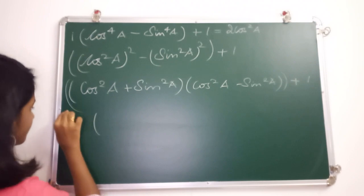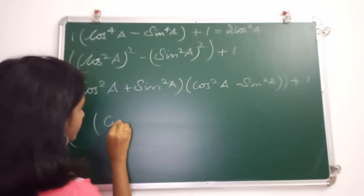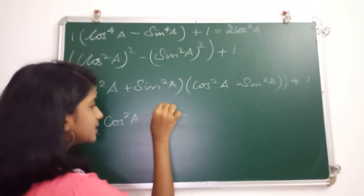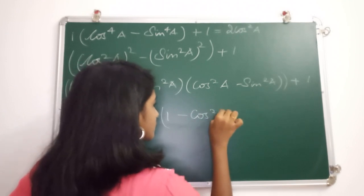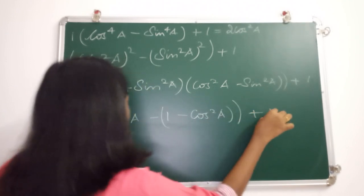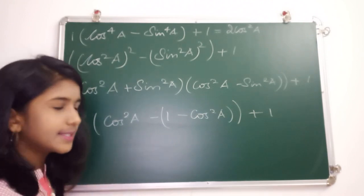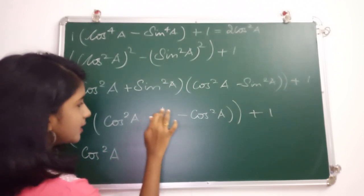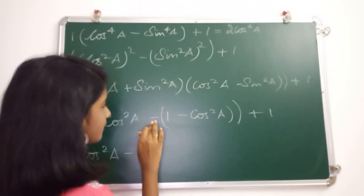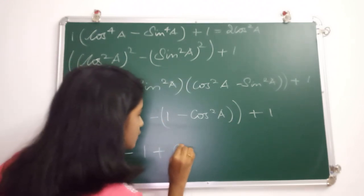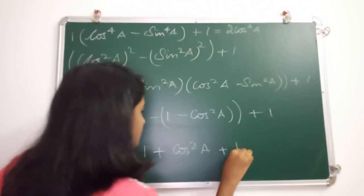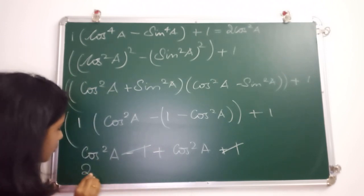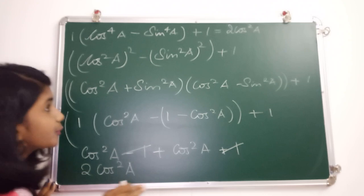Now, cos²A + sin²A equals 1, so we have 1 into (cos²A minus sin²A) plus 1. Since sin²A can be written as 1 minus cos²A, we get cos²A minus (1 minus cos²A) plus 1. The minus 1 and plus 1 cancel, and cos²A plus cos²A gives us 2cos²A. This proves the identity.